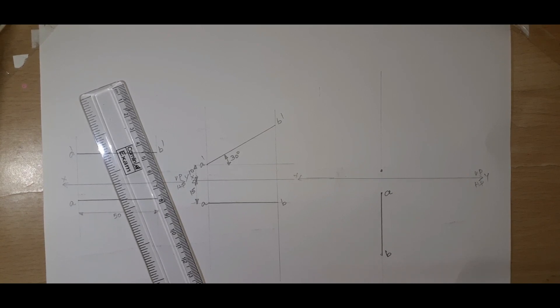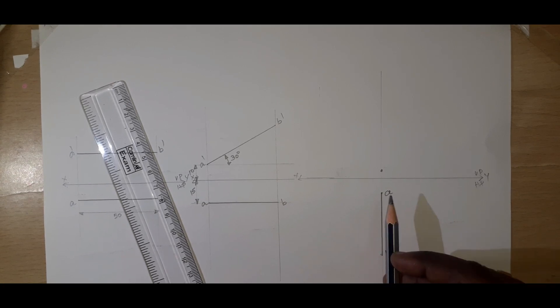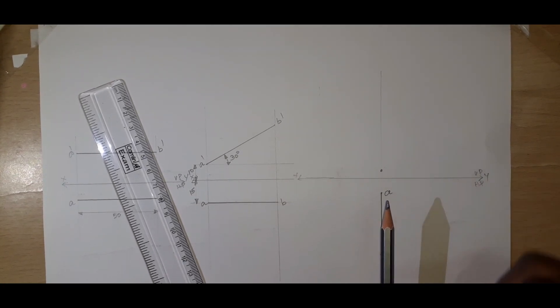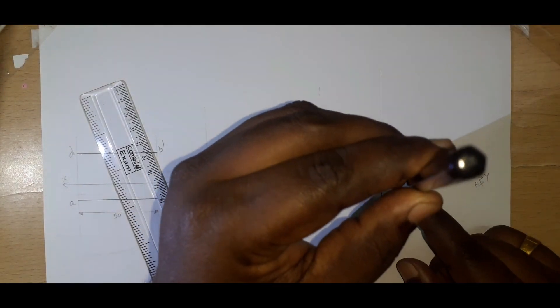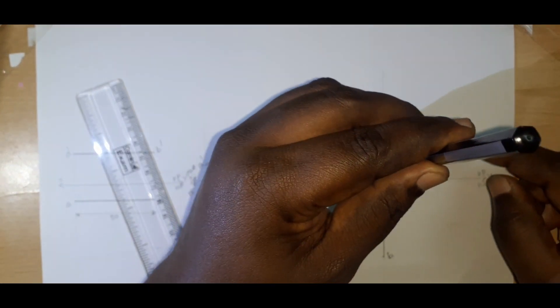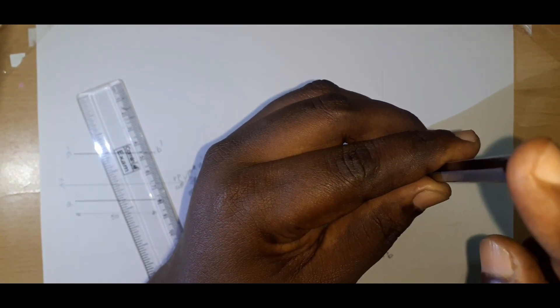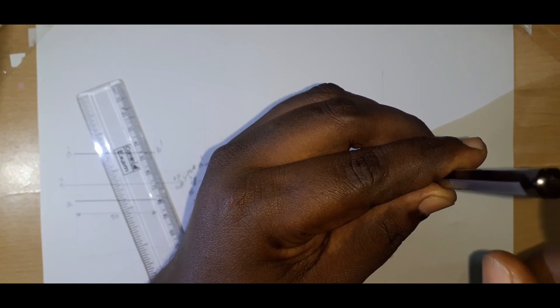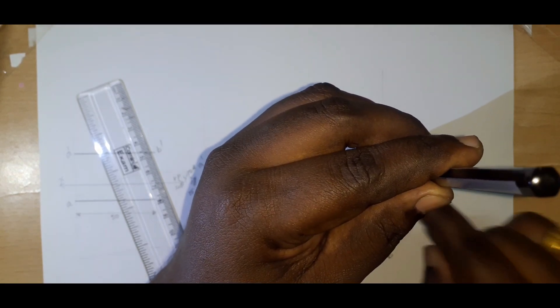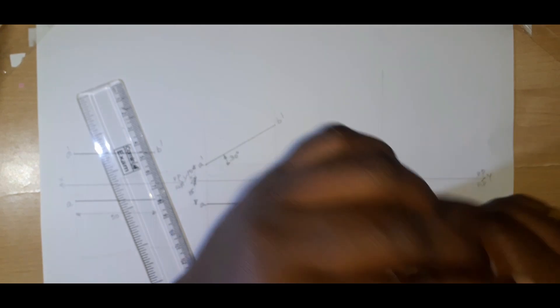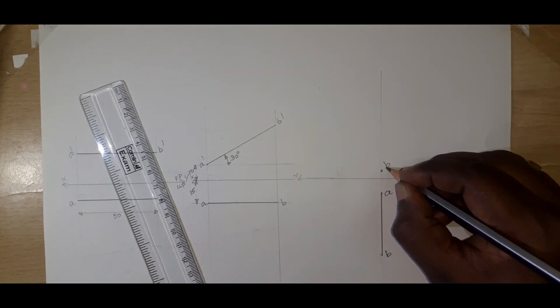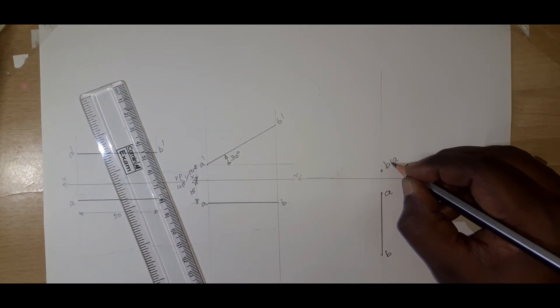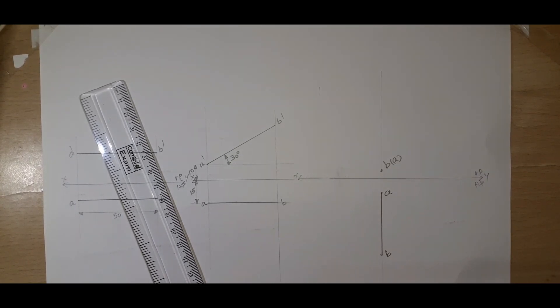While seeing from the front view, the point B is visible first. This is the starting point and this is the end point. It is located here. While seeing from the top, the end point is only visible, not the starting point. What is the end point name? It is B. So B is visible and A is invisible. We need to mark it in bracket. That is very important.